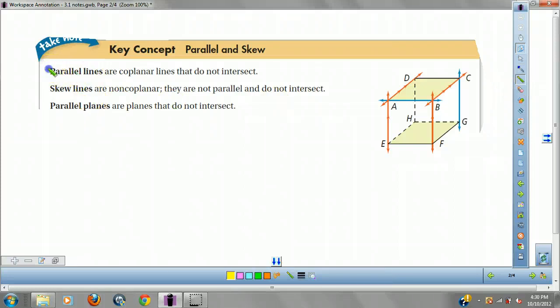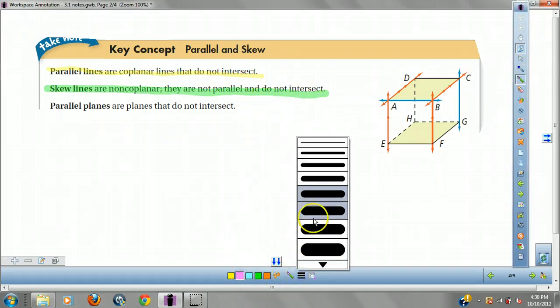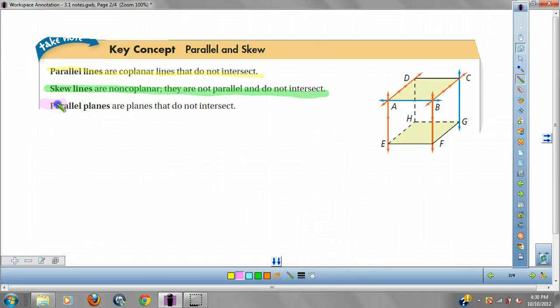Parallel lines, we already talked about, are coplanar lines that do not intersect. Coplanar. Remember, so they have to be on the same plane. Skew lines are non-coplanar. They don't intersect. And that's because they aren't on the same edge of the box. And parallel planes are planes that do not intersect.